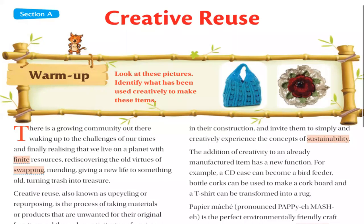Good morning everyone. It's your English class and today we are going to study our first chapter of the second unit — Recreative Reuse. Recreative reuse means to use waste things for a different or new purpose, basically for home decoration. In this chapter we will understand how to use waste things and also how to make a mask called papier-mâché. Let's start.